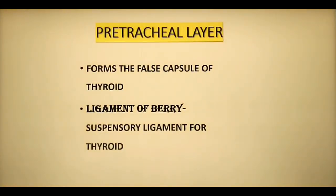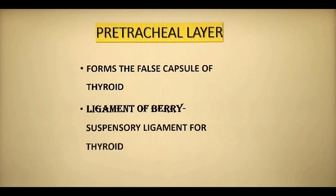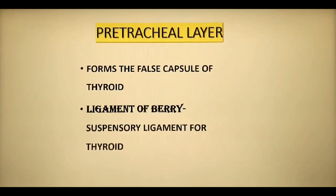Other features of the pretracheal layer include that on either side of the thyroid gland, it forms a suspensory ligament known as the ligament of Berry, attached to the cricoid and thyroid cartilage. Its function is to support the thyroid gland and prevent it from sinking into the mediastinum. This fascia also provides a slippery surface for the free movement of the trachea during swallowing.